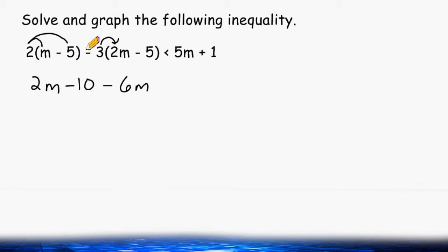Because we have a minus sign in front of this 3, we have to consider this 3 a negative value. And because 5 has a minus sign in front of it as well, we have to consider this 5 a negative value as well. So negative 3 times negative 5 is positive 15, and then we are just going to bring down the rest of our inequality which is less than 5m plus 1.